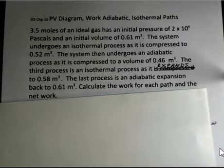This video is going to show a pressure volume diagram and discuss an ideal gas system that undergoes four processes coming back to the starting condition. We're initially at 2 times 10 to the fourth Pascals, the true pressure not the gauge pressure. We have an initial volume of 0.61 cubic meters.